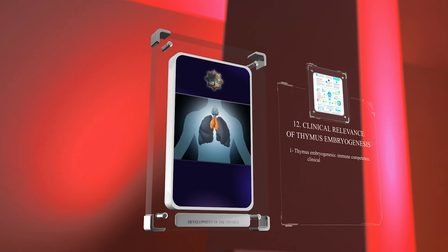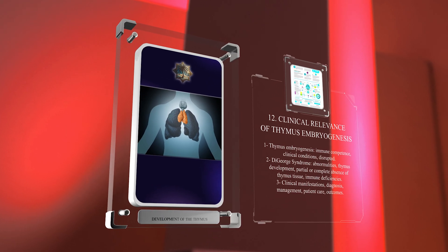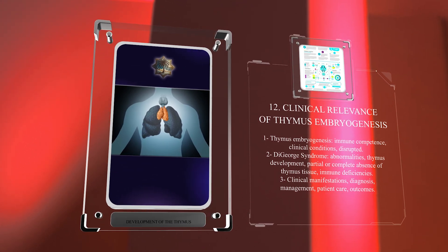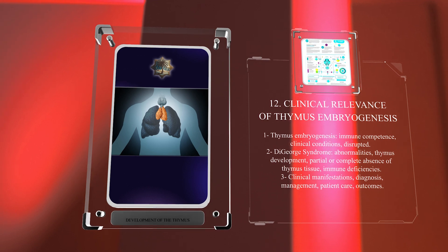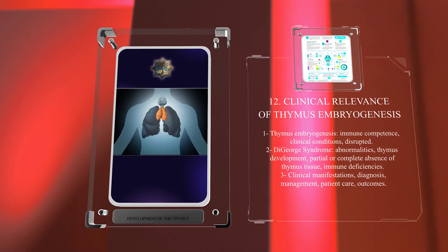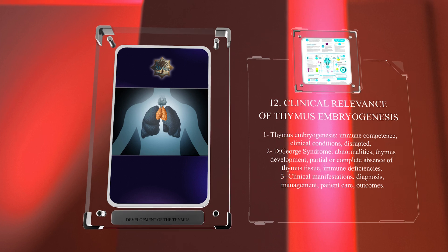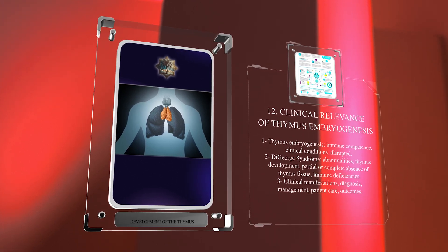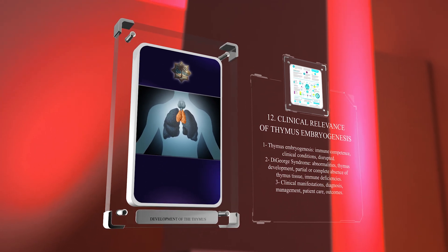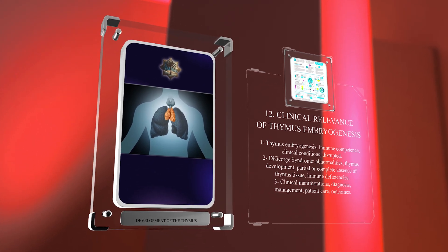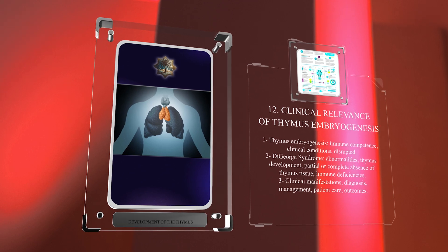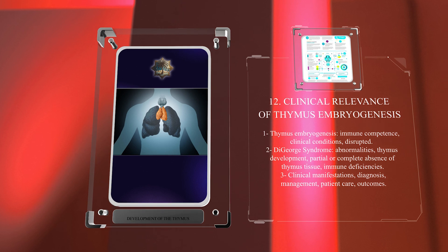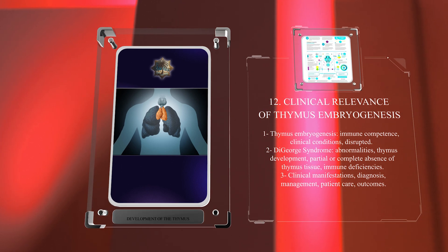Thymus embryogenesis plays a critical role in establishing immune competence and is associated with various clinical conditions when disrupted. DiGeorge syndrome is one such condition, characterized by abnormalities in thymus development resulting in a partial or complete absence of thymus tissue. Individuals with DiGeorge syndrome typically exhibit immune deficiencies, highlighting the crucial role of thymus embryogenesis in immune function. Examining these clinical conditions sheds light on diagnosis and management, ultimately improving patient care and outcomes.